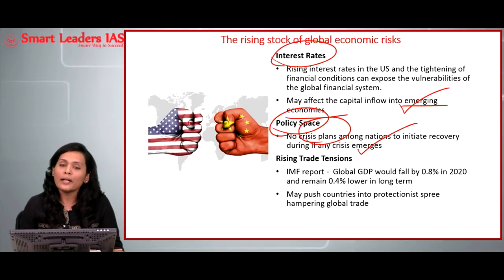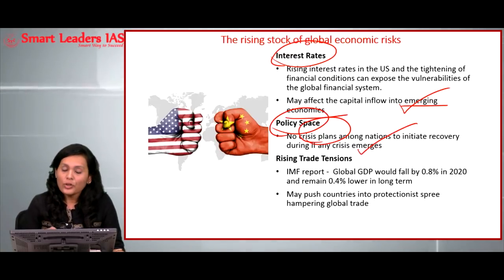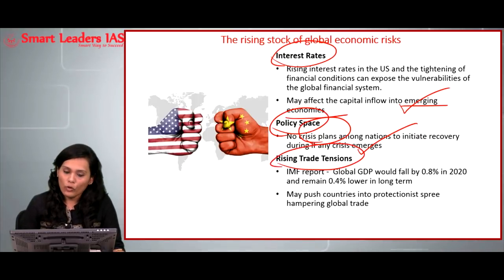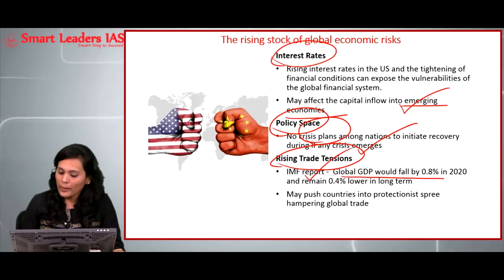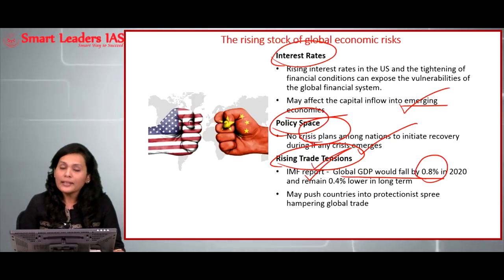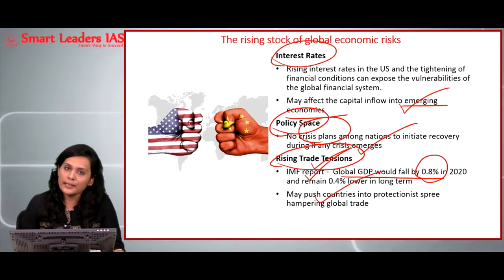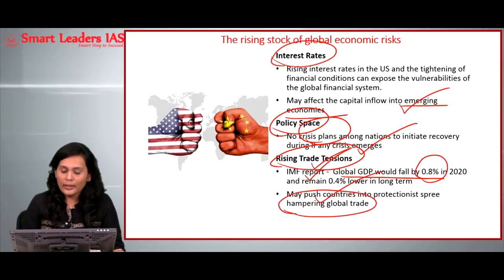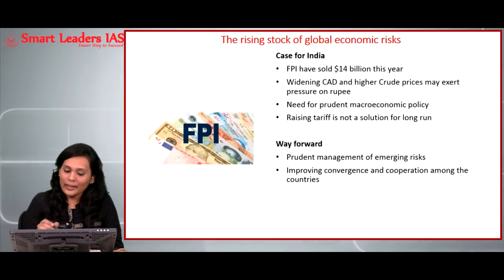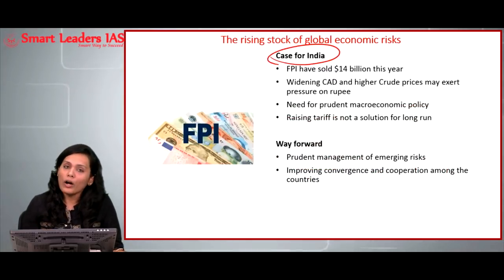The third factor is rising trade tensions. As the IMF report highlights, the global GDP will fall by about 0.8 percent in 2020 because of rising trade tensions between different countries of the world. This may push many countries into a protectionist spree — for example, what is currently happening in the USA — which will in turn have its impact on global trade.